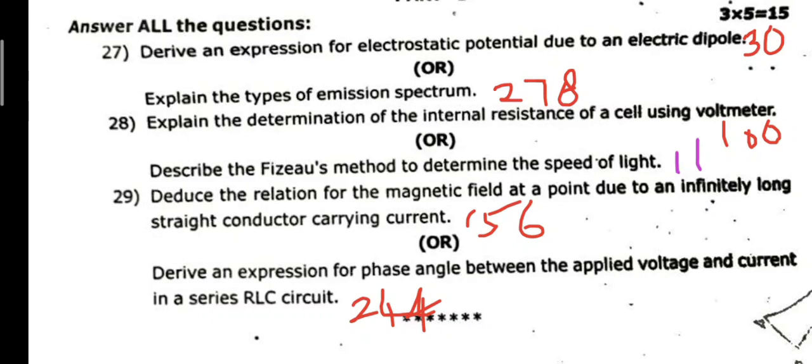28th: Explain the determination of the internal resistance of a cell using voltmeter, page 100, or describe the Foucault method to determine the speed of light. Just have a glance at page 11, second volume. 29th question: Deduce the relation for magnetic field at a point due to an infinitely long straight conductor carrying current, page 156, or RLC circuit phase angle between applied voltage and current, page 244. Very important question. Now compulsory problem, two and one answers.